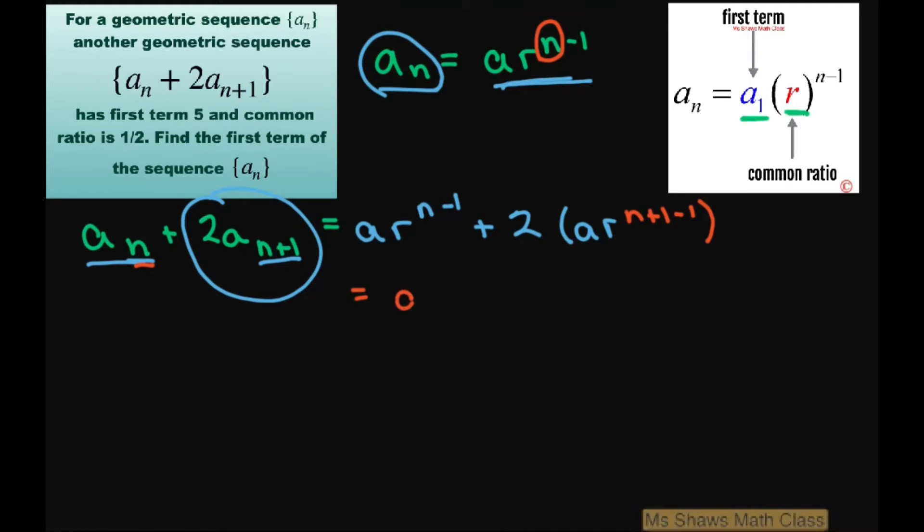This is going to equal a times r to the power of n minus 1 plus 2ar to the power of n because the ones will cancel. Now I can factor out, let's write this as a plus 2ar and factor out times r to the power of n minus 1.